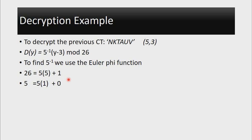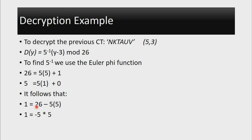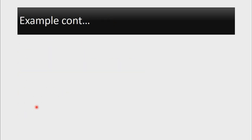To get the inverse of 5, we use the first equation and make 1 the subject: 1 = 26 - 5 × 5. Since any multiple of 26 equals 0 in mod 26, this becomes 1 = -5 × 5 mod 26, which means 1 = (-5) × 5. Since the inverse of an element is the one that when multiplied gives 1, and multiplying -5 by 5 gives 1, the inverse of 5 is -5.